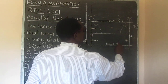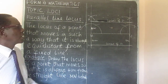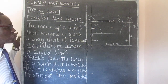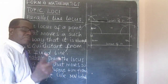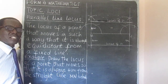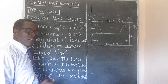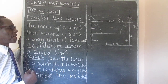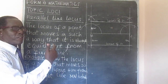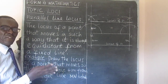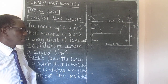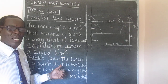So in a question, it will be stated clearly whether P is on the upper side of MN or the lower side. We have now learned two types of loci: first, the locus of a point equidistant from a fixed point, which is a circle; and second, a point equidistant from a fixed line, which is a line parallel to the given one on both sides, unless the side is specified. We will move to another type of locus in the next lesson.